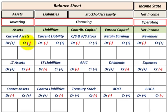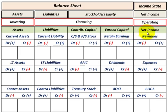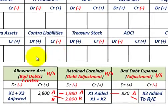Just to review: assets are on the far left side, and they have to balance with our liabilities, contributed capital, and earned capital. Then we have the income statement separated out. That covers the full template overview.